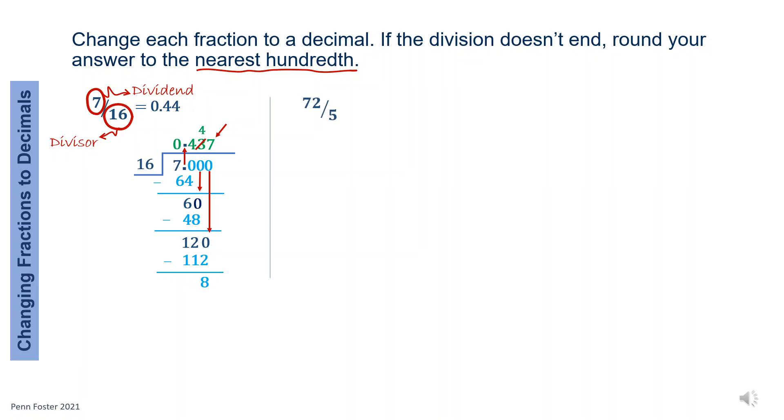Same process for the next fraction. 72 over 5. Set up the long division. 7 over 5 is 1. 1 times 5 is 5. 7 minus 5 is 2. Now 22 over 5 is 4. 4 times 5 is 20. Then 22 minus 20 is 2. Write a decimal point and bring in a 0. 20 over 5 is 4. 4 times 5 is 20. 20 minus itself is 0. 72 over 5 is exactly 14.40.